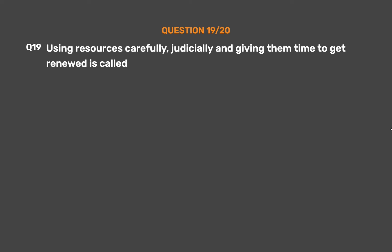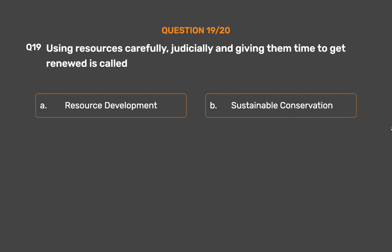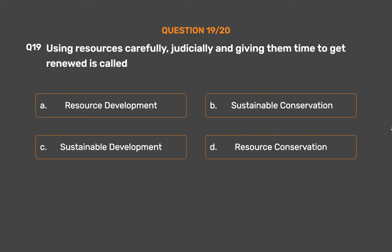Question number 19. Using resources carefully and judiciously, and giving them time to get renewed, is called: Option A: Resource development. Option B: Sustainable conservation. Option C: Sustainable development. Option D: Resource conservation.